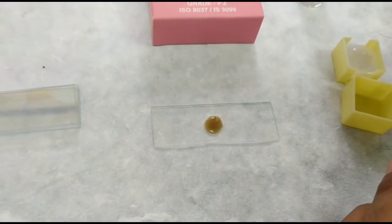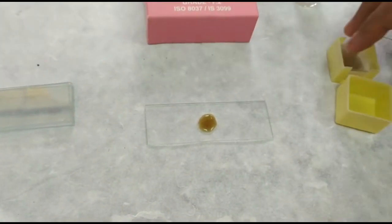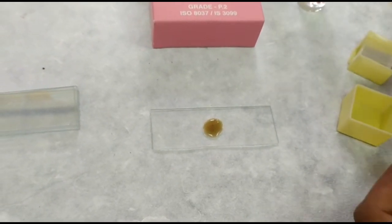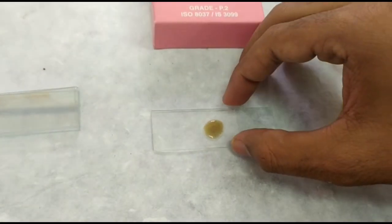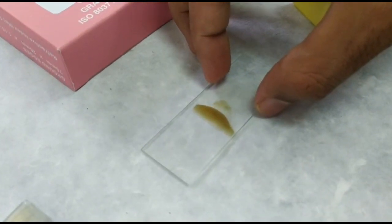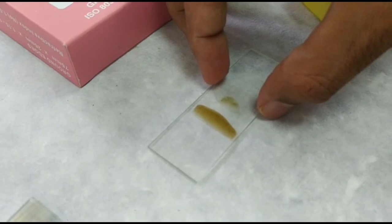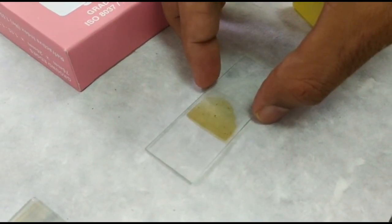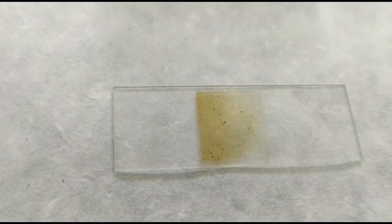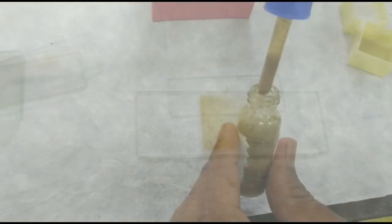Next step is to place the cover slip. The edge of the cover slip should touch the drop at 45 degree angle. Take it behind two to three centimeters. Then slowly reduce the angle and when it is near to slide, drop it. Remember, wet mount should not have any air bubble.